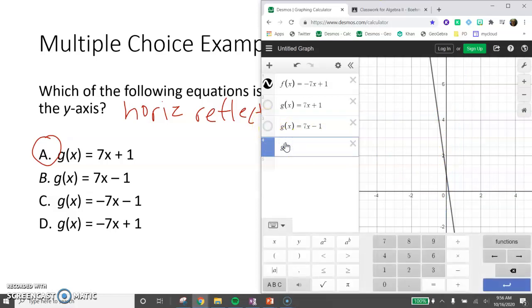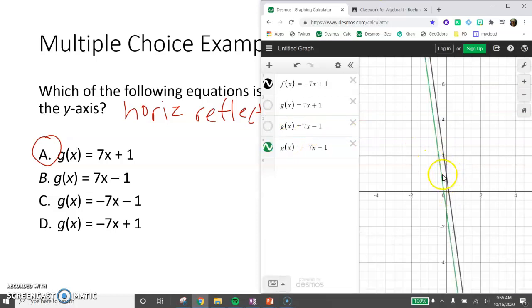Let's try choice C, g of x equals negative 7x minus 1. That looks like it's been horizontally translated or vertically translated. That's what's tough with lines. It could be either way. So that doesn't make sense. That's not a reflection.